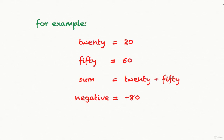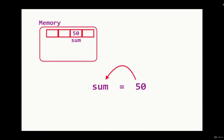We can also assign negative numbers to variables. Like here I have assigned negative 80 to variable name negative. Now let's see what actually is happening in computer memory when we make a variable and assign any number to it.